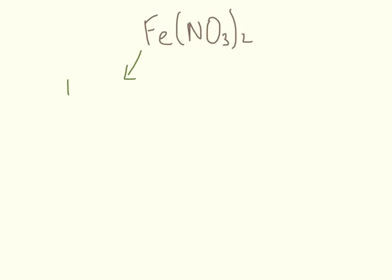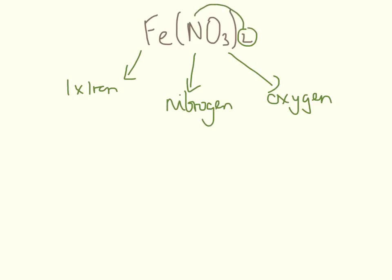A bit more complicated now, Fe(NO3)2. Again we have one iron, we have nitrogen and then we have oxygen. Nitrogen, there are two because there is two outside. Oxygen, we have to do two times three, that means there are six oxygens. So we have three elements and nine atoms.